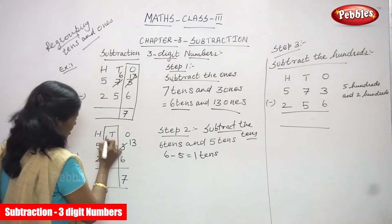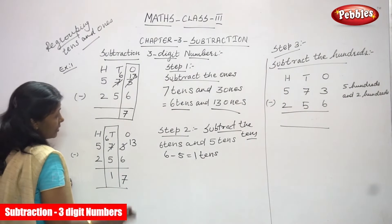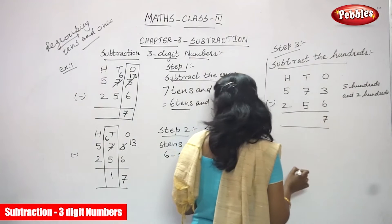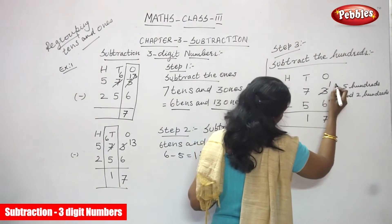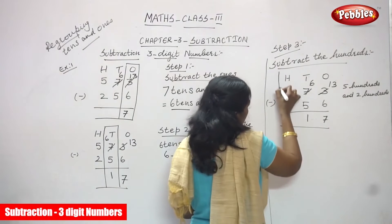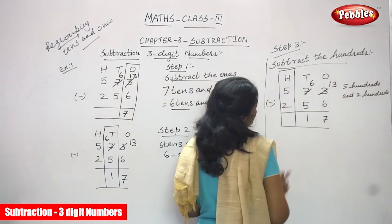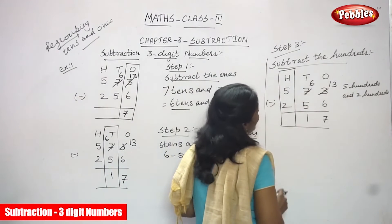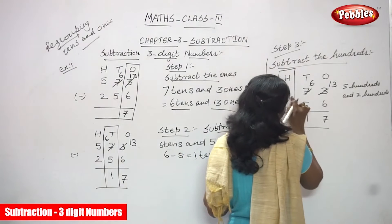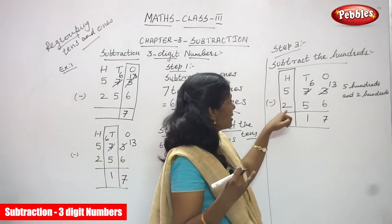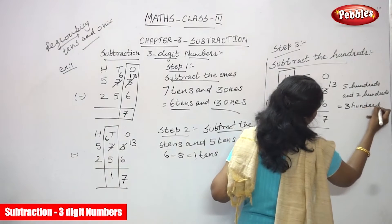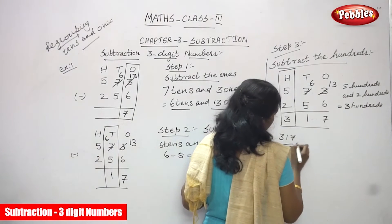This is the right answer. From 6 to 5 you get 1. So I have written 1 here. Now step 3 — subtract the hundreds. Already I have written 7 ones and 1 ten. Now focusing on the hundreds place: 5 hundreds and 2 hundreds. That means 5 minus 2. Backward counting: start with 2 — 3, 4, 5. The answer is 3 hundreds. So the answer is 3, 1, 7. This is the right answer.